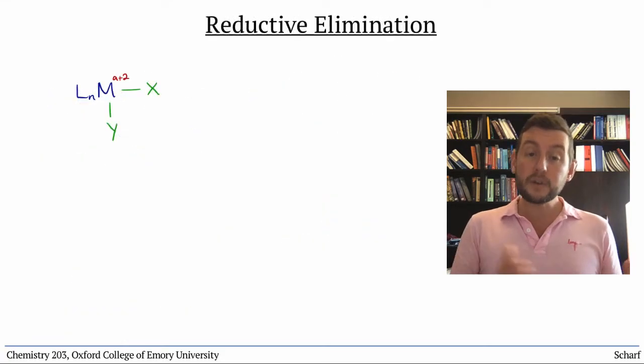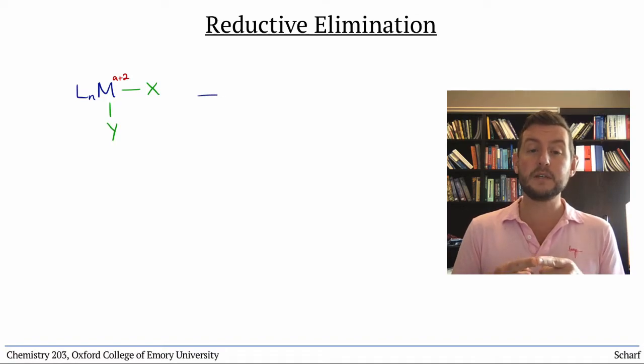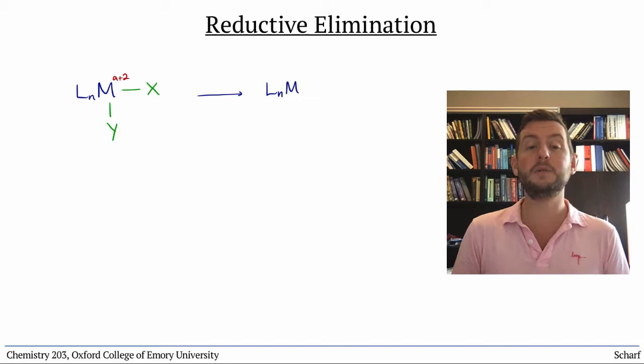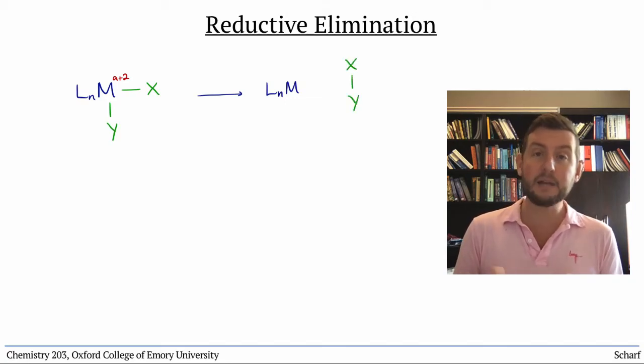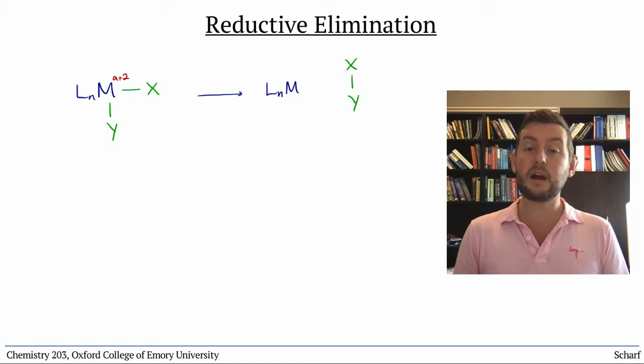The reverse of oxidative addition is called reductive elimination. It occurs when two X-type ligands bonded to a transition metal complex are expelled, making a new bond between the two atoms that had been bonded to the metal. This process results in the oxidation state of the metal being reduced by two.